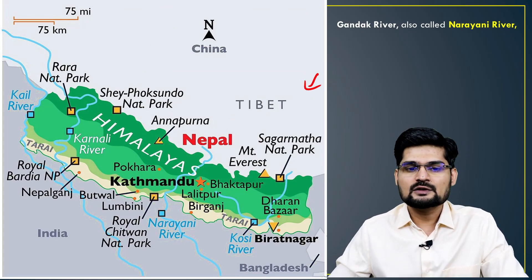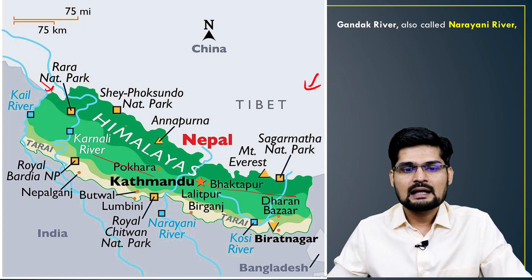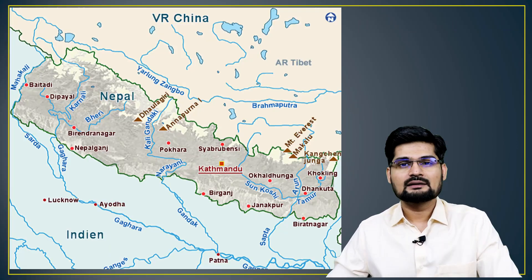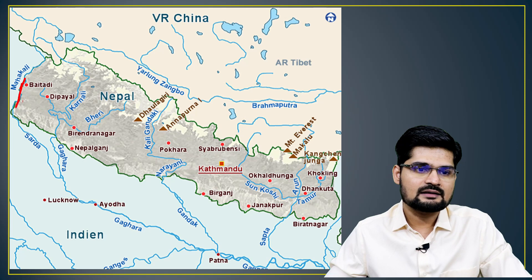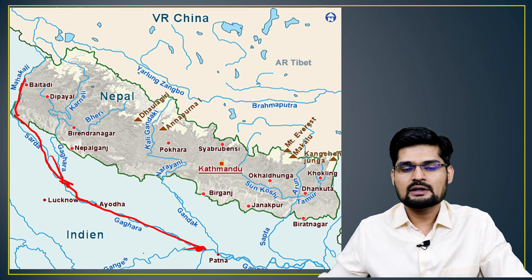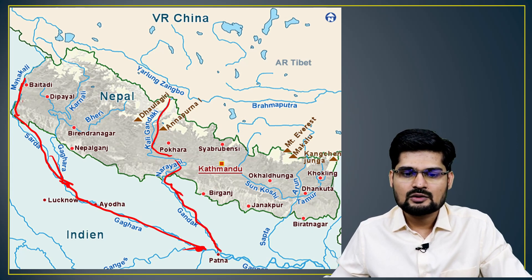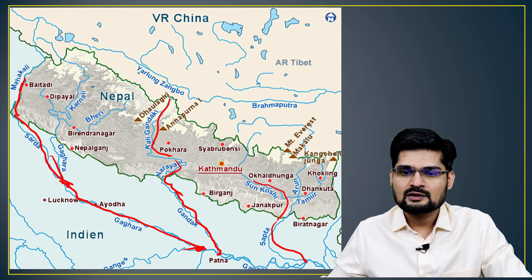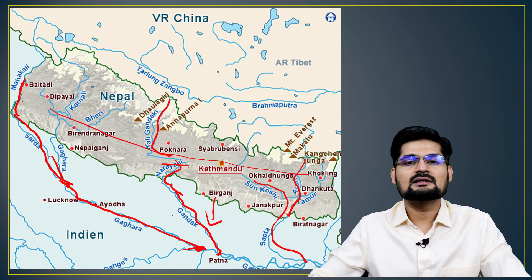Nepal is part of the mountain states with the Mahabharata Range passing through it. Mount Everest, the highest peak in the world, is situated in Nepal. Major rivers of Nepal include: from west to east — Mahakali, Sarda/Saryu/Ghagra, Kali Gandaki, Narayani (which becomes the Gandak in India and joins the Ganga), Sankoshi, and Sapta Koshi — all originating from the Himalayan region and joining the northern Indian plains.